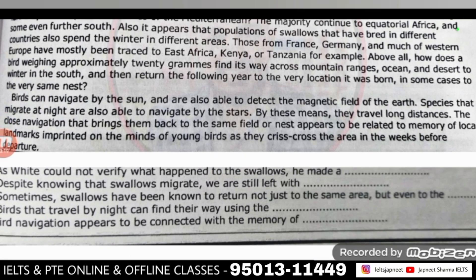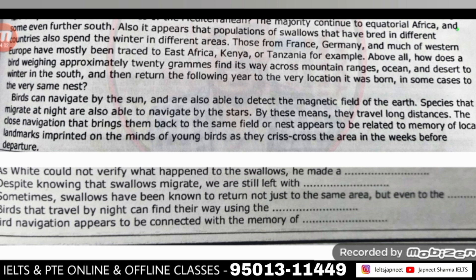Q4: 'Birds that travel by night can find their way using the dash.' देखो, कई चीज़ें यहाँ पे mentioned हैं — sun भी लिखा हुआ है, magnetic field भी लिखा हुआ है — but वो daytime की बात है। यहाँ पे बात करी जा रही है night की, तो night के लिए यहाँ पे answer है 'stars.' I hope सबका correct हो।